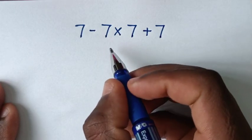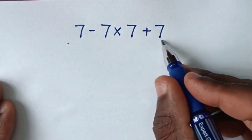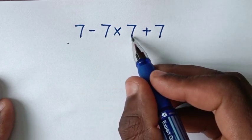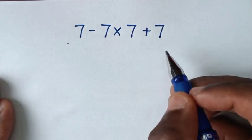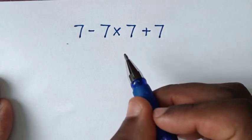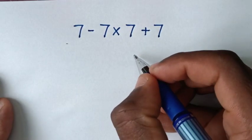Hello, you are welcome. Let's solve this math problem: 7 minus 7 times 7 plus 7. To solve this problem, we'll use the BODMAS rule.